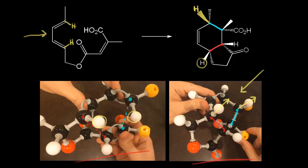The outside substituents go down. This methyl group is an outside substituent, and so is this CH2. So on our picture, here is our methyl group and here is that CH2. For our product, those two are going away from us. This methyl group is going away from us in space, and so is this CH2. So for our product, here is our methyl group going away from us, and here is our CH2 going away from us.